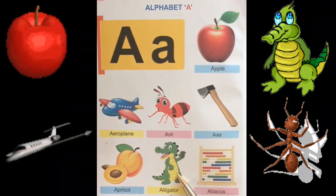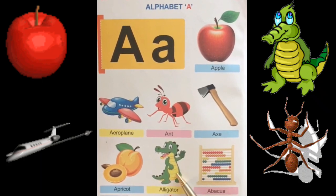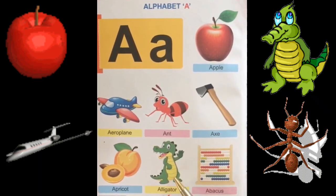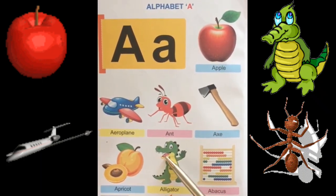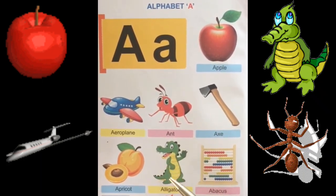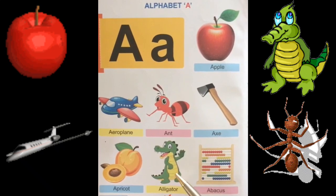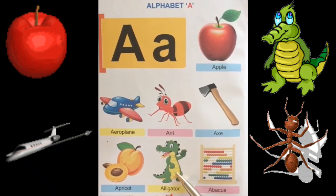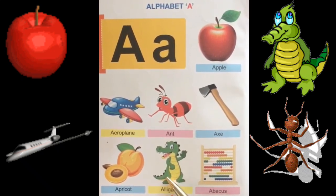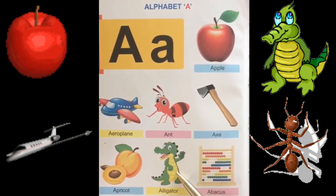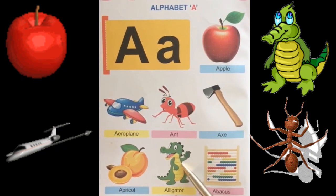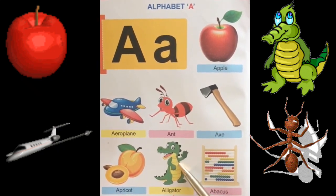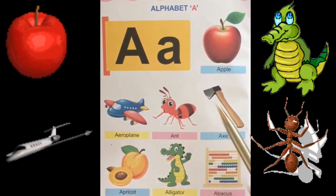Alligator. Alligator is an animal. It has a long tail, a big mouth, and sharp teeth. Yeh ni iski long tail hoti hai, yeh ni poonch hoti hai. Iske jo teeth hoti hai, voh kaafi sharp hoti hai.